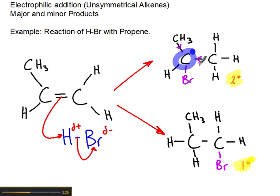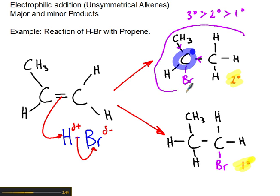Therefore, the order of stability is: tertiaries are greater than secondaries, which are greater than primaries. More of the major product would form because it goes via the secondary carbocation, and less of the minor product would form — hence the terminology major product and minor product.